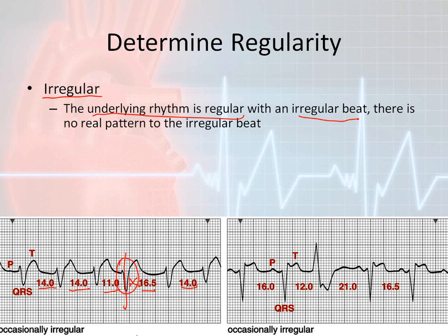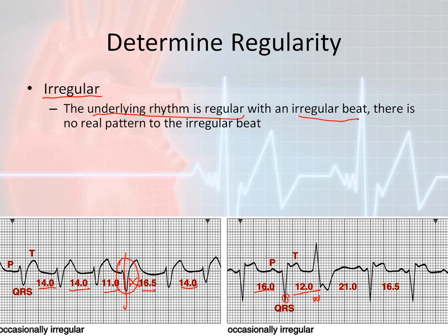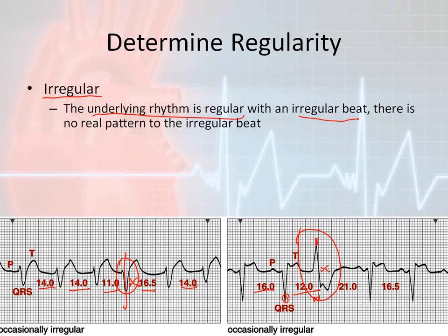The important thing here is that the underlying rhythm is regular. It is an irregular beat that makes it an irregular rhythm. Now looking at the rhythm on the right side: we have sixteen little boxes here, then twelve boxes from this QRS to the next, then a pause of twenty-one little boxes. If you march this out with your calipers, they would end up off from the expected QRS, showing this is a premature beat. Again, the underlying rhythm is regular — it is just this one ectopic beat that makes the difference.